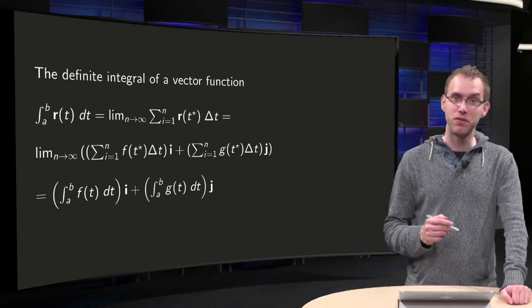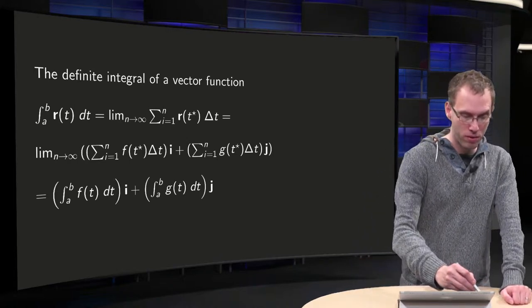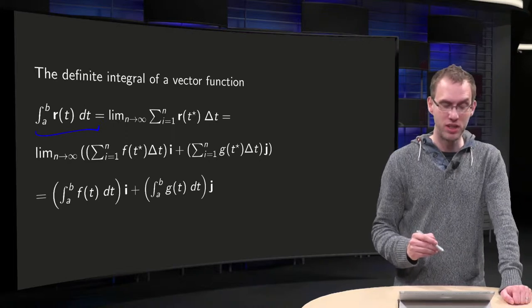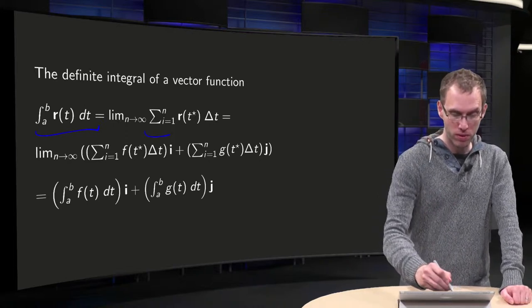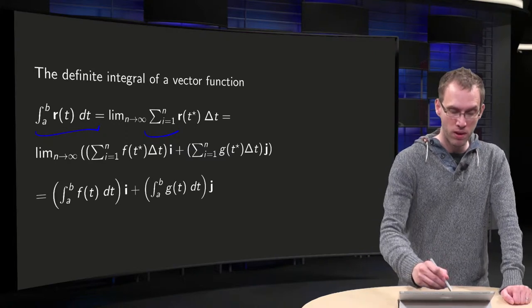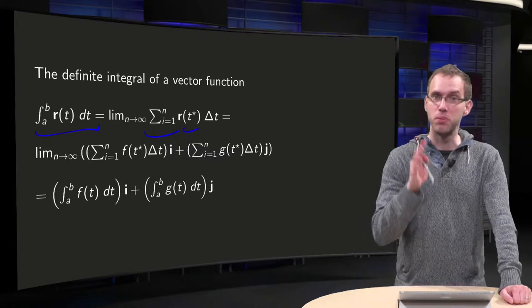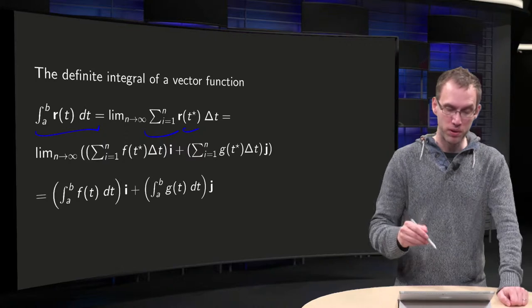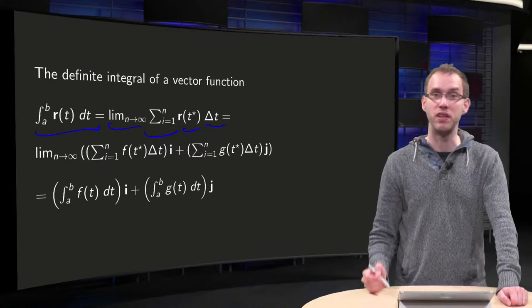So what is the definition of the definite integral? Integral from a to b, r(t) dt. We form the Riemann sum, sum to infinity, r at the star at some point in the appropriate interval times Δt, and then we take the limit n to infinity.